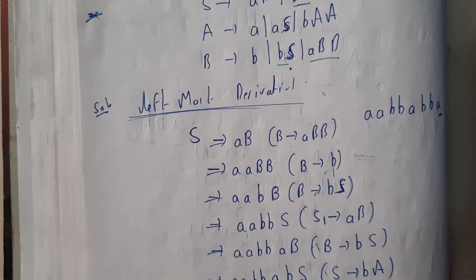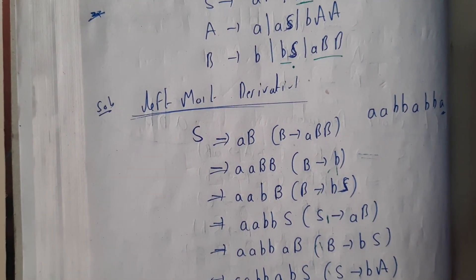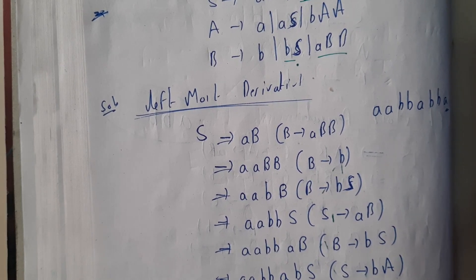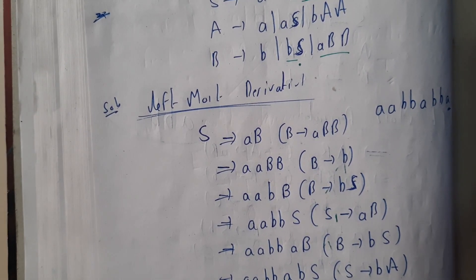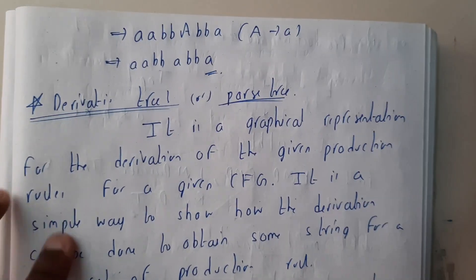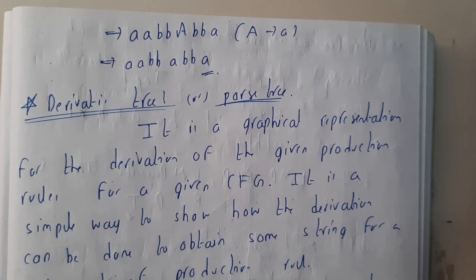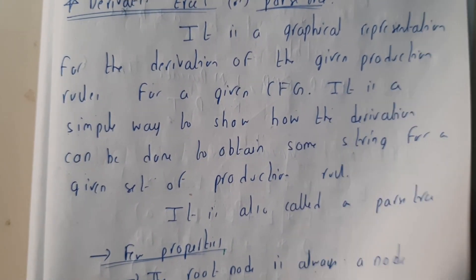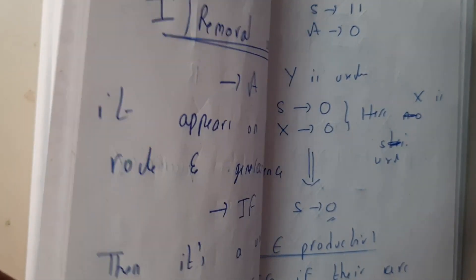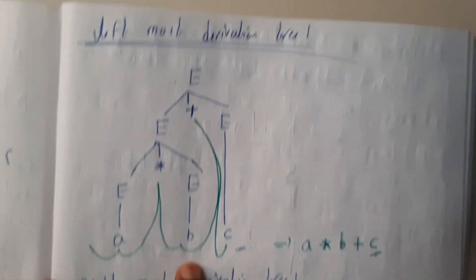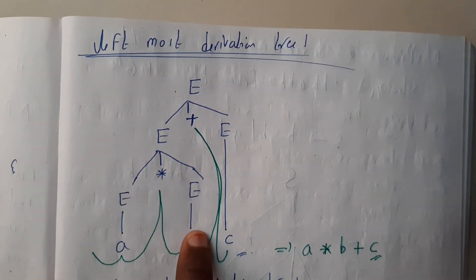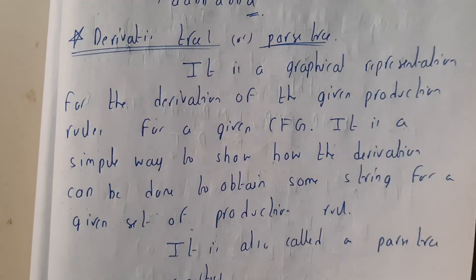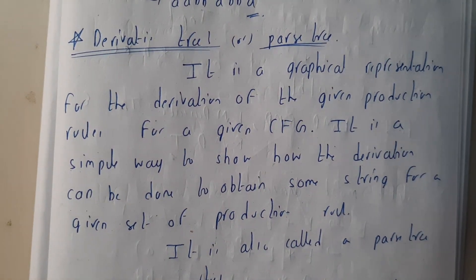So we got the result in both rightmost and leftmost derivation. I hope everyone got a good idea on this. In the next tutorial we will be going through derivation trees — also called parse trees. We can derive the same strings using trees, and we'll go through that in the next tutorial. Thank you, thanks for watching.